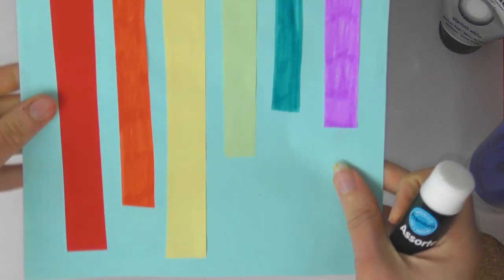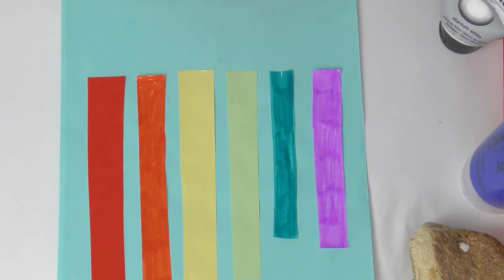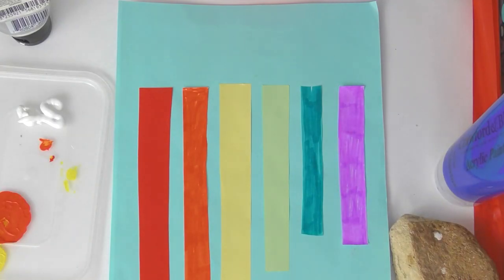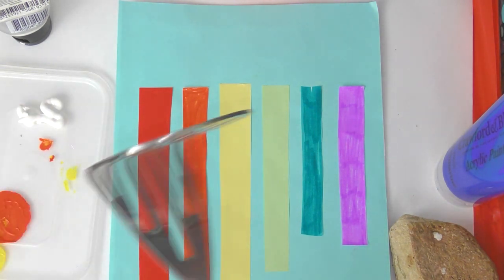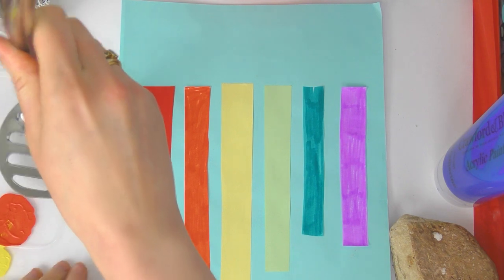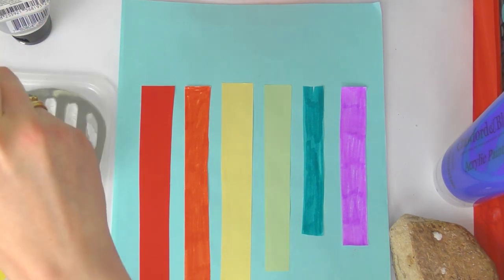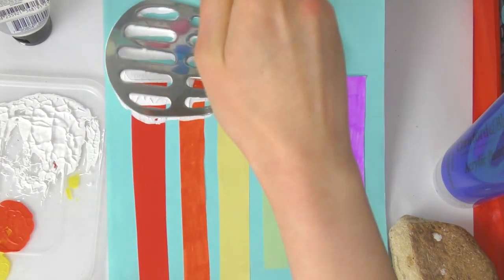Once you have cut all of the strips out and put them on your page, you need to get some white paint and your potato masher. Again make sure you get permission before you go into the kitchen and take one. Just cover the potato masher with the paint and then you can just stamp on some clouds. This works really well because of the holes in the masher, it gives a nice cloud texture. If you don't have a potato masher you can just use a sponge, that will work just as well too.